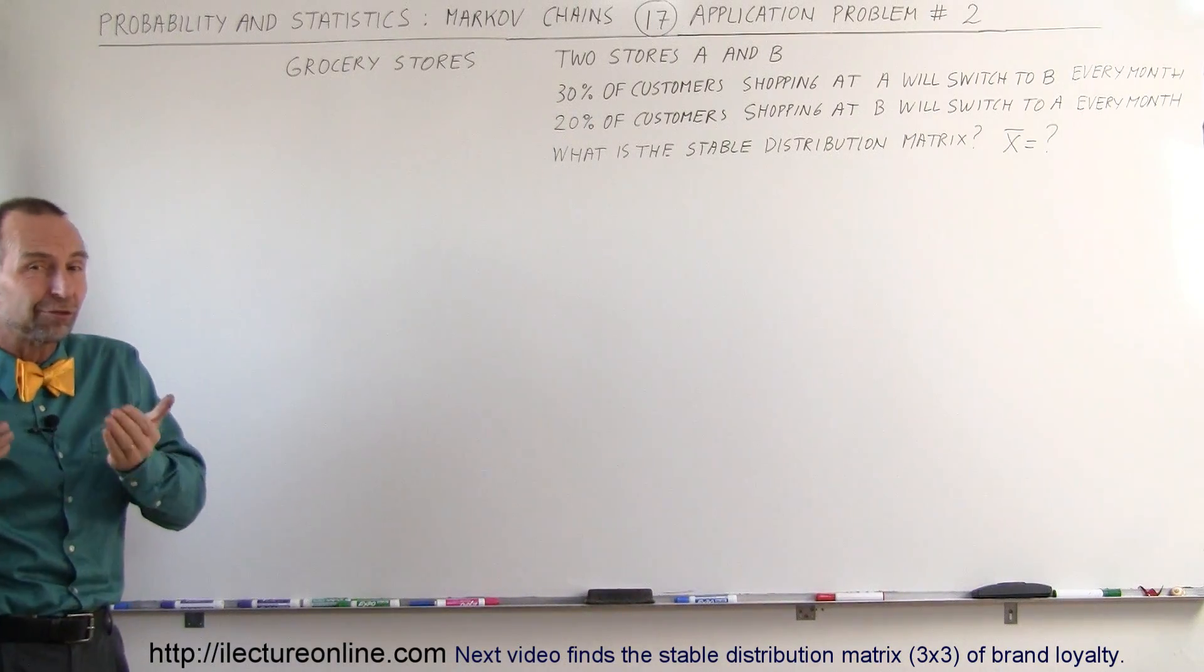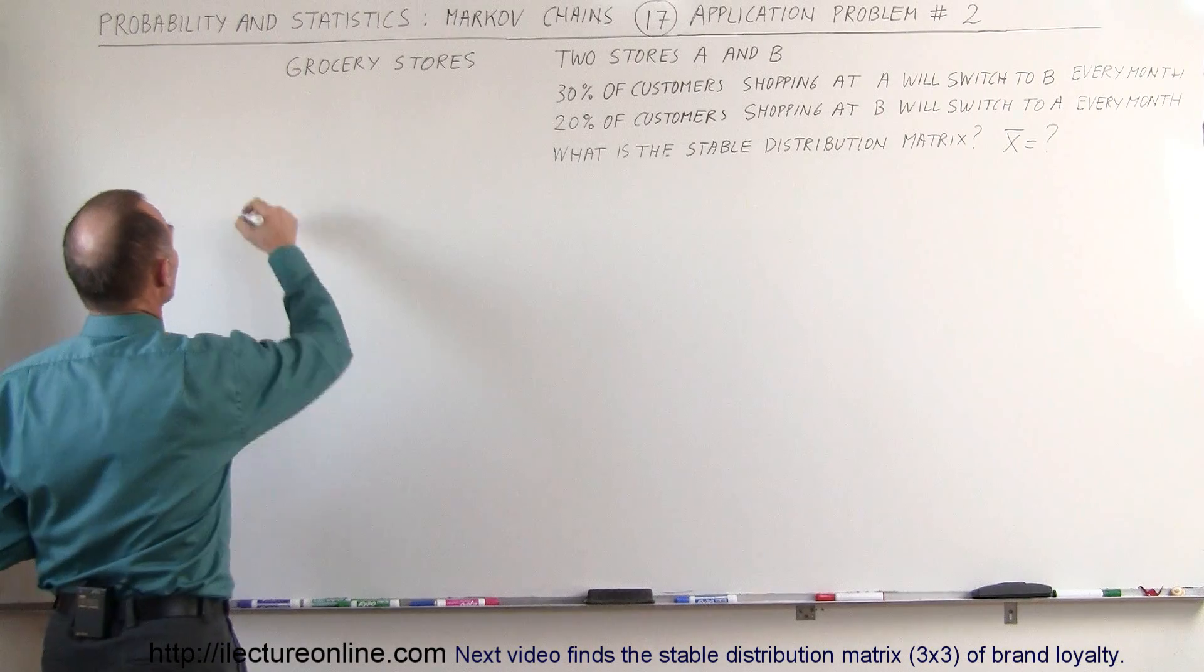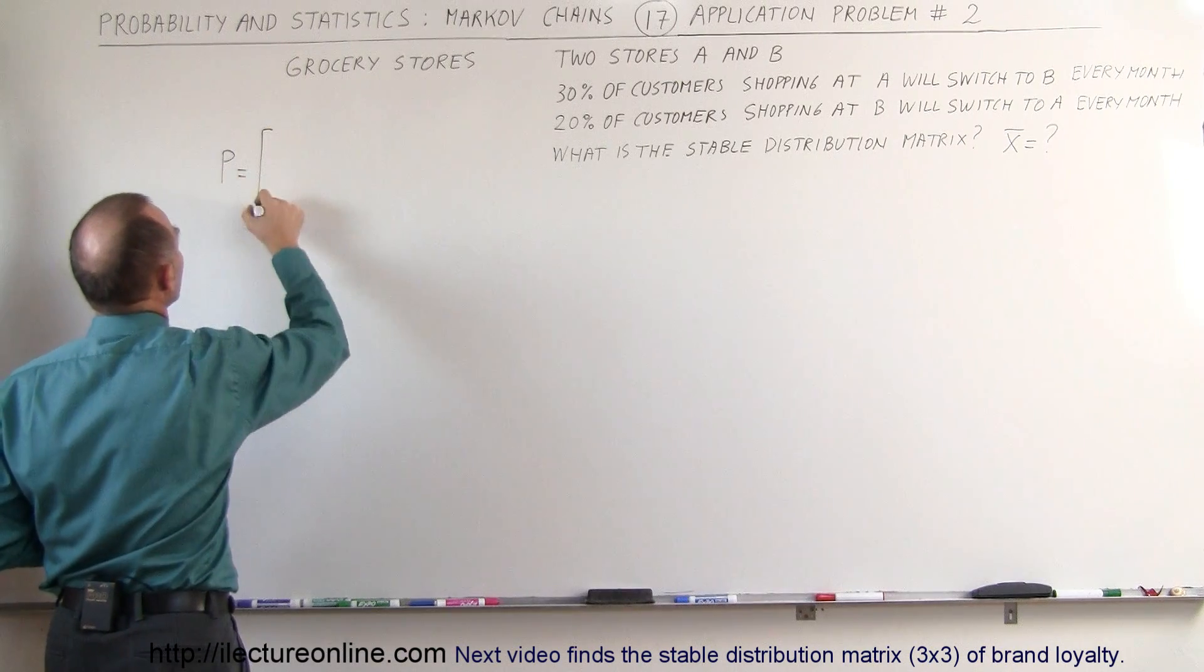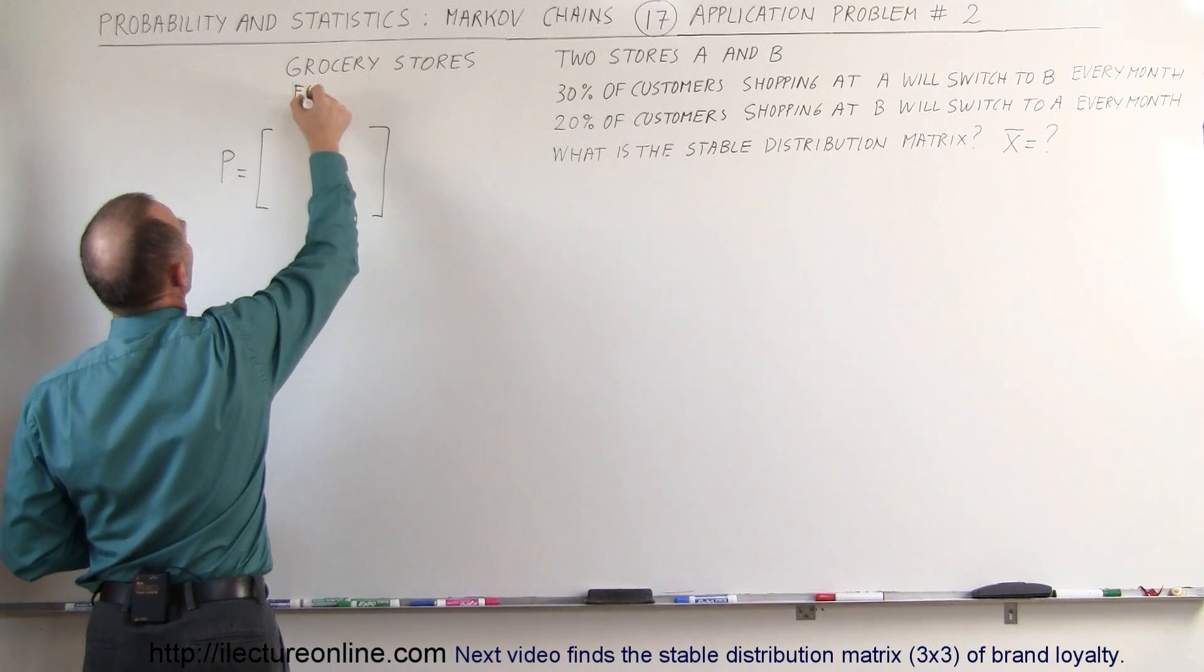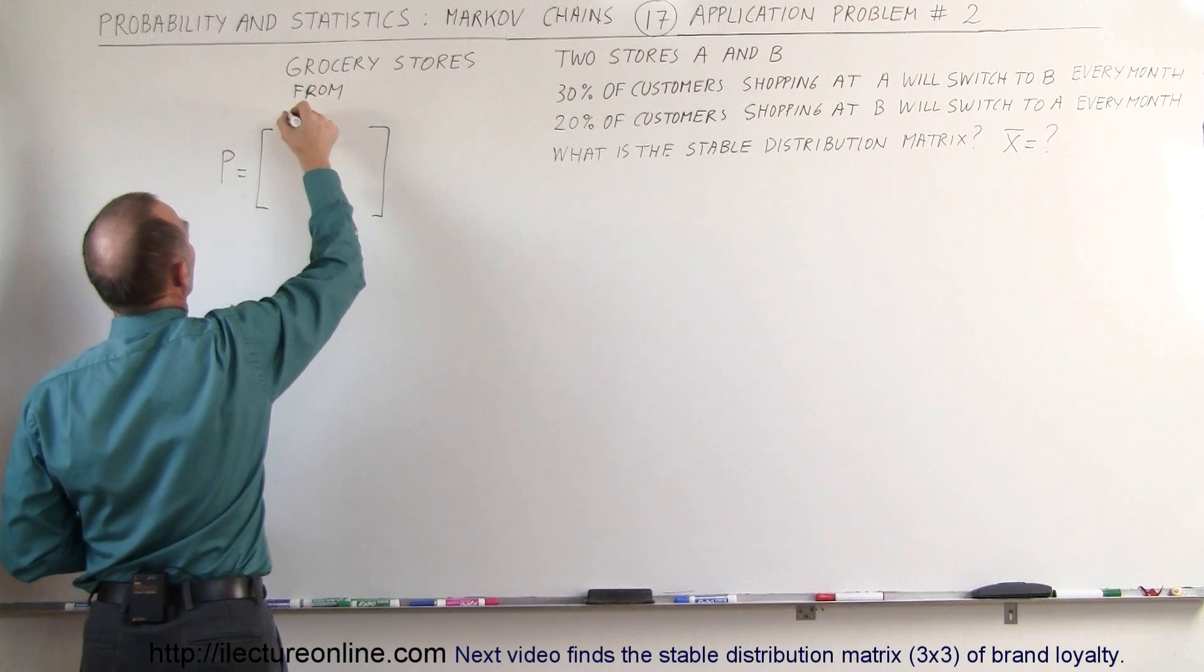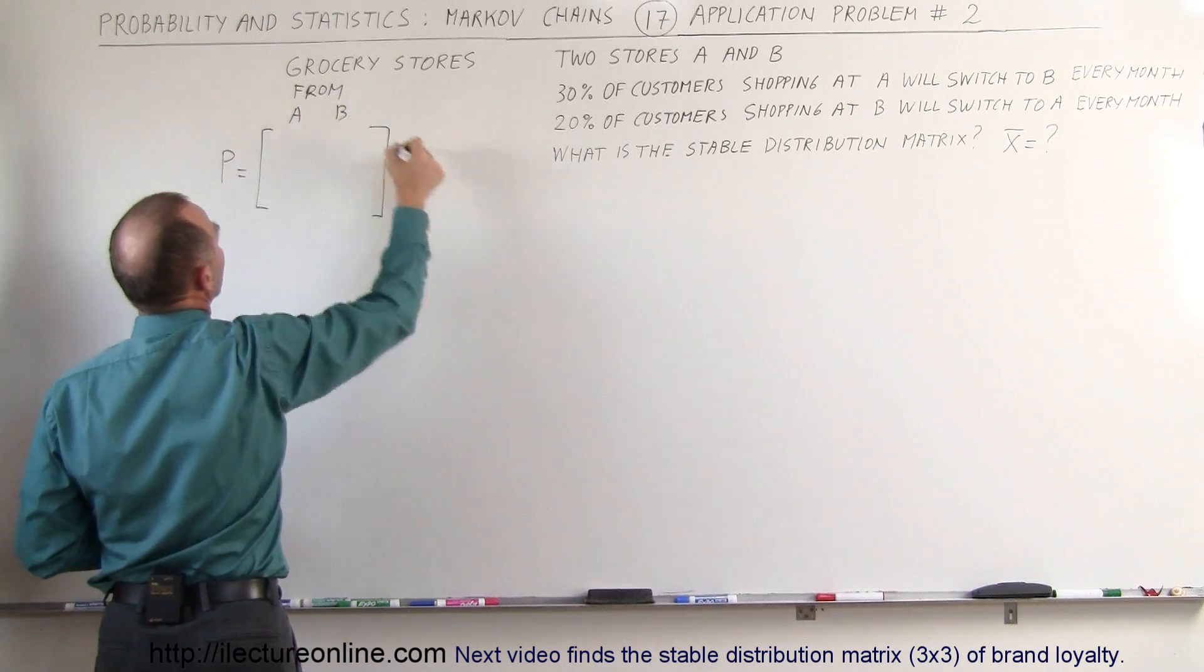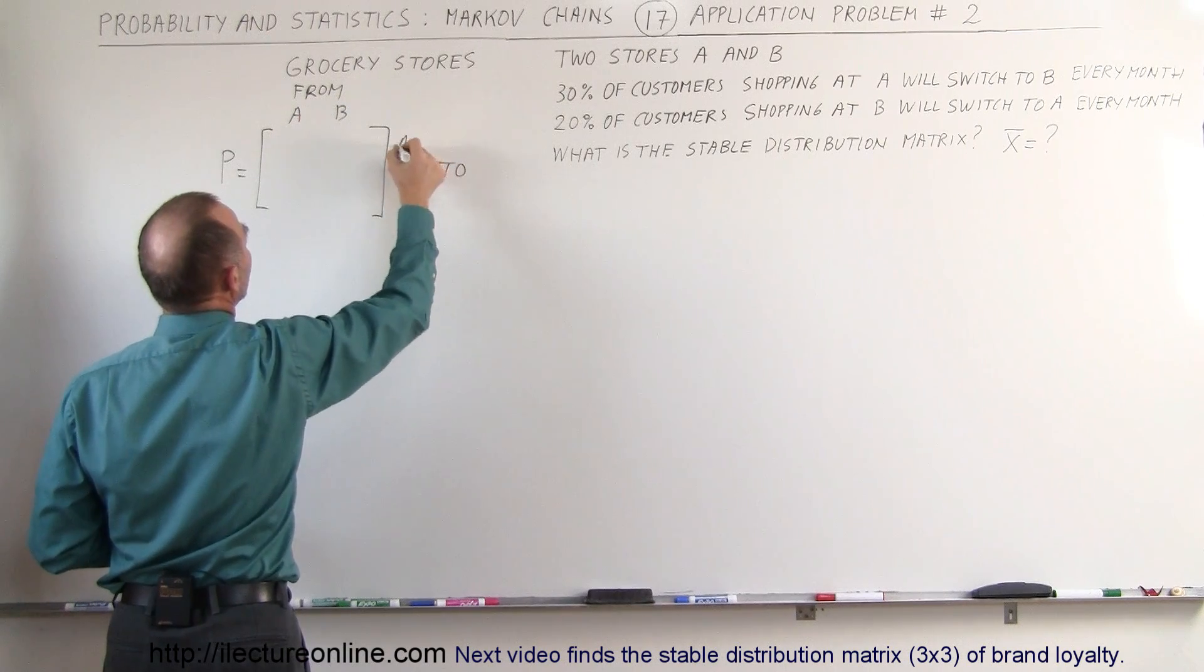In order to figure that out, we first need to find out what the probability matrix is. P is equal to... Here we have the from row, so from A and B, and here we have the to row, which is A and B.